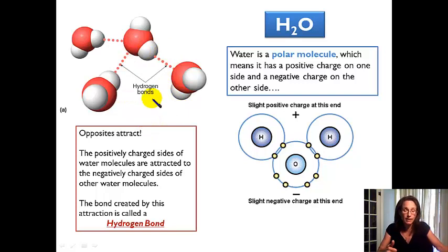So hydrogen bonding is a result of the polar nature of the water molecule. The fact that it has a positive charge on one side and a negative charge on the other side. It's a bent shaped molecule. And because of hydrogen bonding, water has a lot of unique characteristics. And we'll talk about those next.